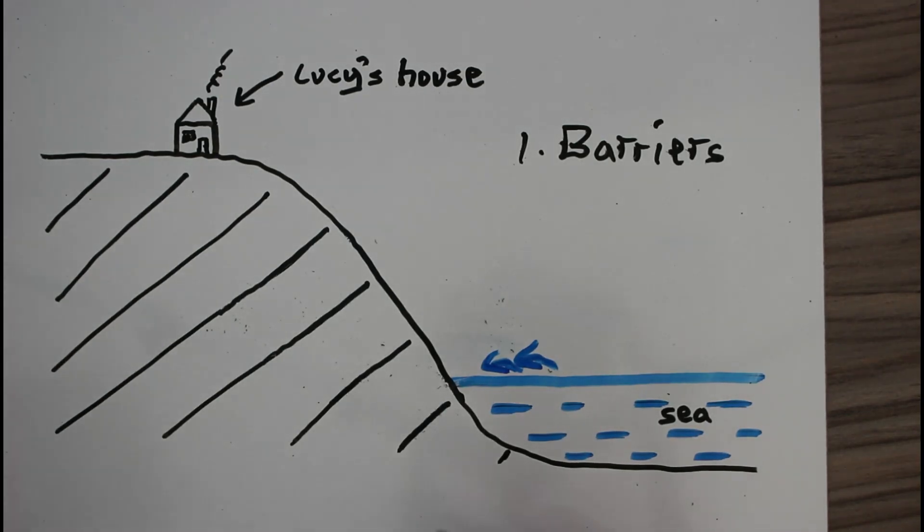Another hard engineering method or barrier is to put groynes going down the beach. These are wooden or rock fences and they prevent the sideways movement of material through longshore drift. This keeps sand and pebbles on the beach so the waves crash into the sand and pebbles instead of the important rock of the cliff. One advantage is it looks attractive and keeps sand on the beaches for tourists, though other people think the fences themselves look unattractive.